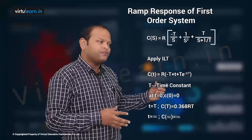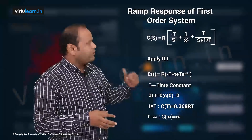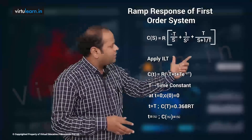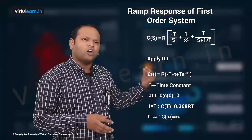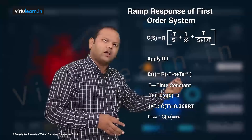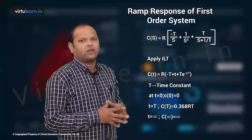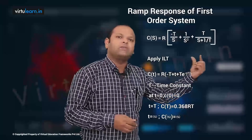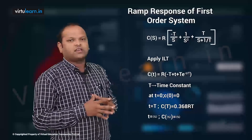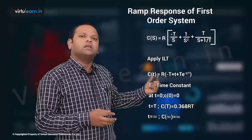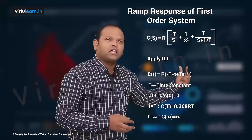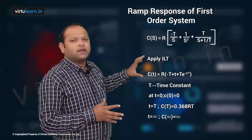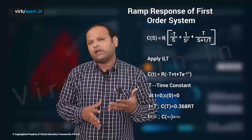So c(t): T/s gives T, then 1/s² gives t, and for T²/(1 + sT) we take T common in the denominator and cancel, leaving T·e^(−t/T). Therefore the final c(t) expression is T − t + T·e^(−t/T). This is the complete response of the system when unit ramp is given.